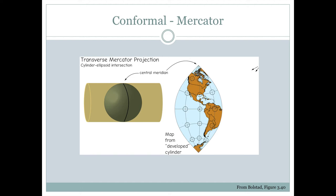One way to minimize this distortion is just to limit how much longitude we look at in any particular map projection. So instead of showing all of the longitude on the map shown to the right here, we could, for example, just show three degrees of longitude to the east and three degrees of longitude to the west of that central meridian that has no distortion upon it.